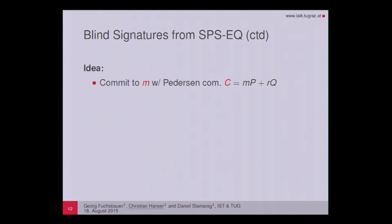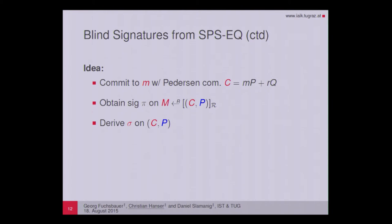The basic idea is that the user first computes a Pedersen commitment to some message M using a commitment key Q, which is part of the signer's public key. The user then sends an arbitrary element of the equivalence class defined by the normalized representative holding the commitment C in the first component and the generator of G1 in the second component. The user obtains a signature from the signer, then uses the change-rep algorithm inherent to SPS-EQ to derive a signature on the original normalized representative, and finally outputs a signature plus a modified opening of the Pedersen commitment.